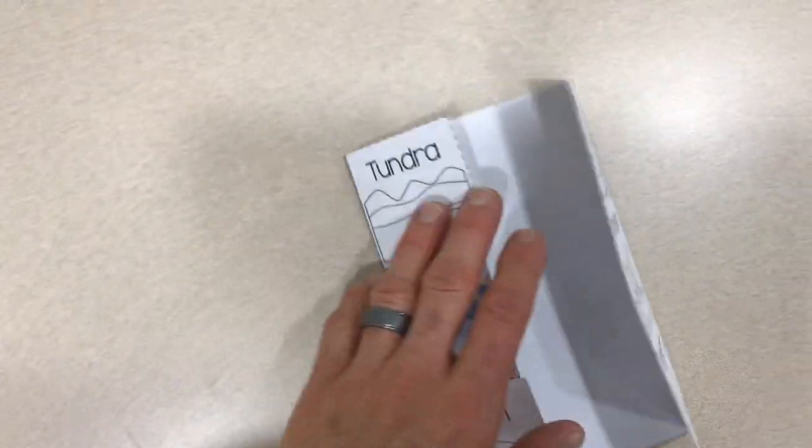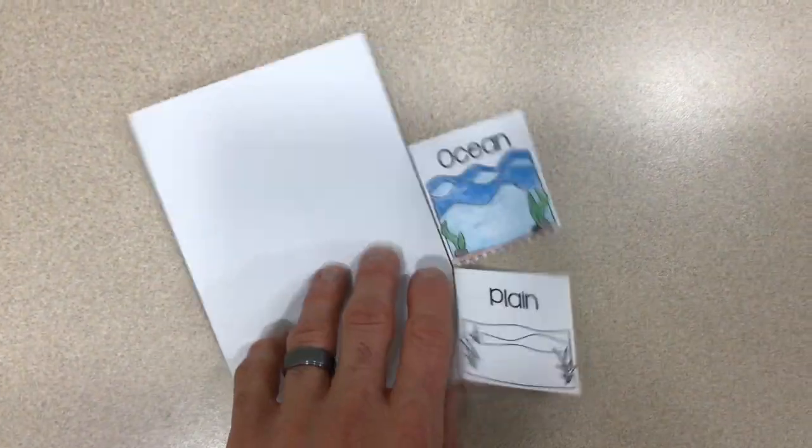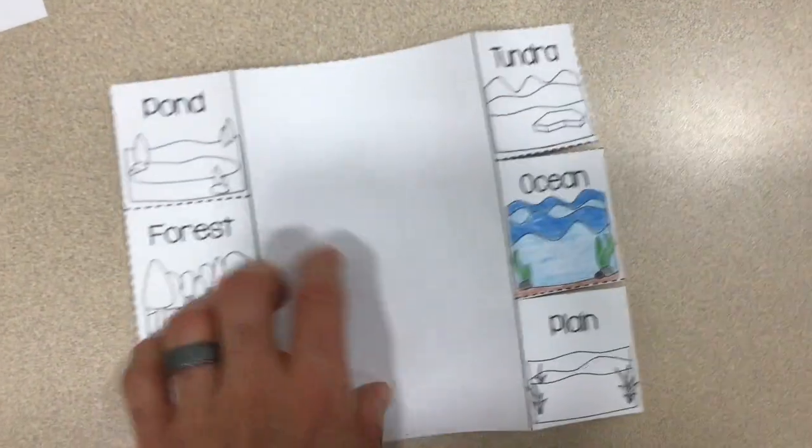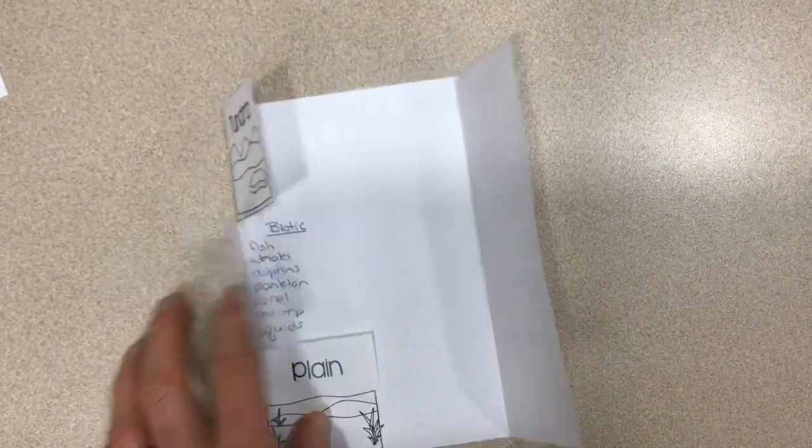So when you're done, you're going to fold it so it makes a little flip book. Okay, so originally it was like this. You just fold on the dark black lines so that the pictures are showing up on the inside like this.